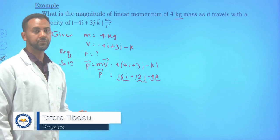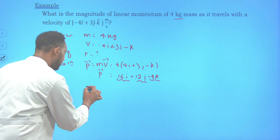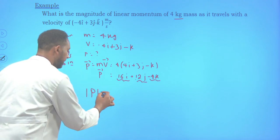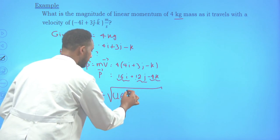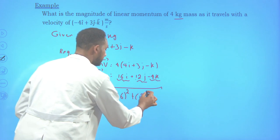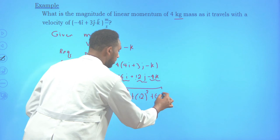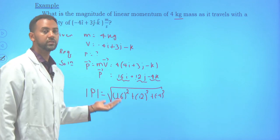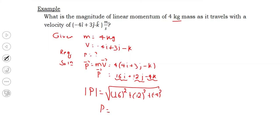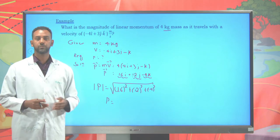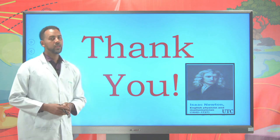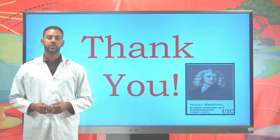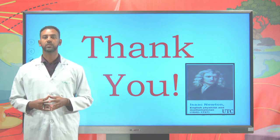We are asked for the magnitude of the momentum. The magnitude is found using the vector magnitude formula: the square root of each component squared and summed. That is the square root of (negative 16) squared plus (12) squared plus (negative 4) squared, giving the magnitude in units of newton seconds or kilogram meters per second. Next time we'll try to see about the law of conservation of linear momentum and some applications of momentum. Bye bye for today.